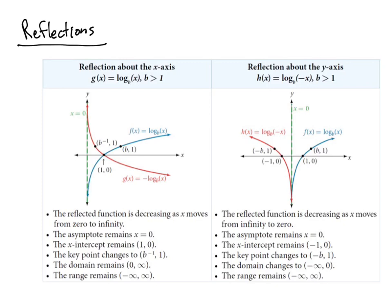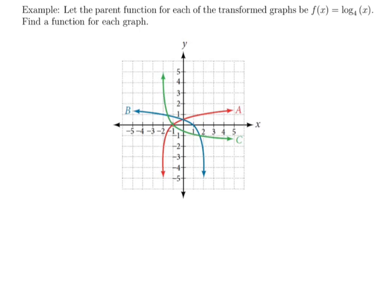Looking at reflections: if we introduce a negative sign in front of the function, that reflects the function across the x-axis. If we put a negative sign inside the argument of the function, that reflects about the y-axis — a horizontal reflection. Let the parent function for each of the transformed graphs be f(x) equals log base 4 of x. Find a function for each graph.